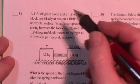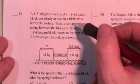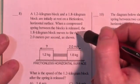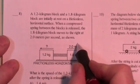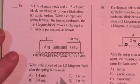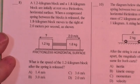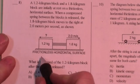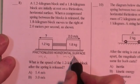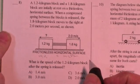Question 8. A 1.2 kilogram block and a 1.8 kilogram block are initially at rest on a frictionless horizontal surface. When a compressed spring between the blocks is released, the 1.8 kilogram block moves to the right and at 2 meters per second, what's the speed of the 1.2 kilogram block? Alright.